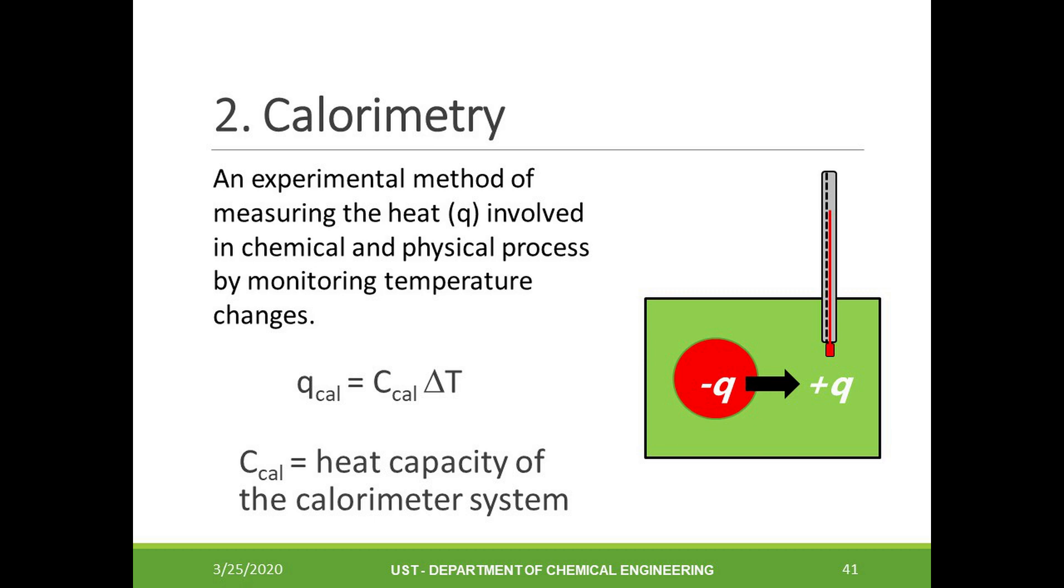The measurement of the amount of heat flow taking place during a chemical reaction and in phase changes can be done through calorimetry. During calorimetry, the temperature change is recorded using a thermometer. From this temperature change, the amount of heat flow can then be calculated.